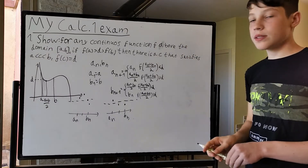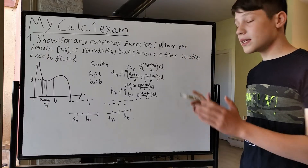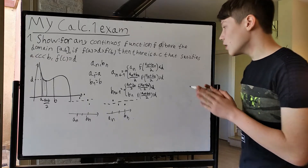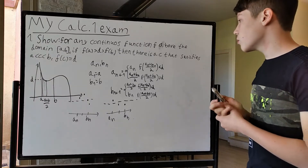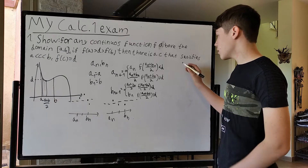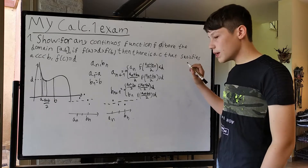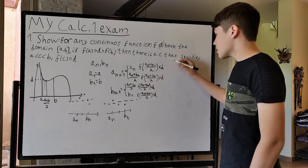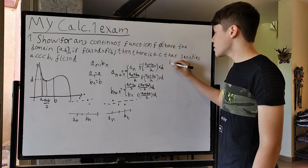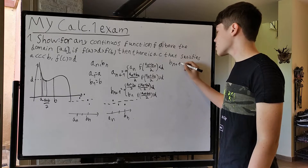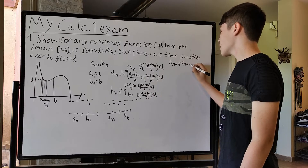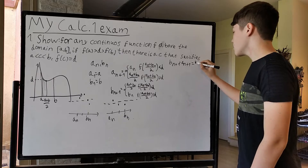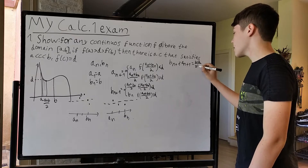Okay, so now we have these two series which basically close in on our value of c. Now, we can definitely prove by induction that b_{n+1} - a_{n+1} = (b - a) / 2^n.